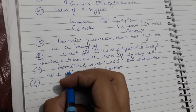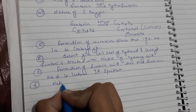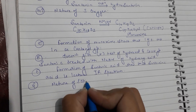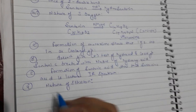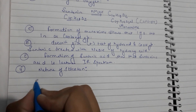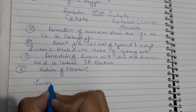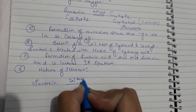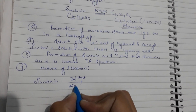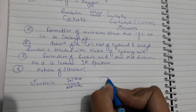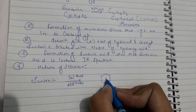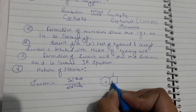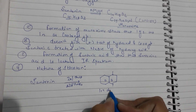The fourth point concerns the nature of the skeleton. On zinc dust distillation, Centonin gives 1,4-dimethyl naphthalene, indicating the nature of its carbon skeleton.